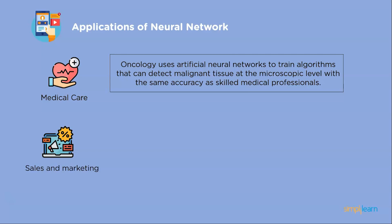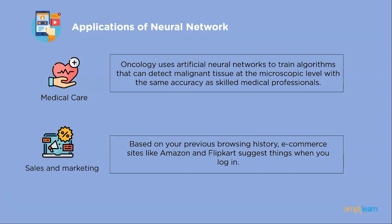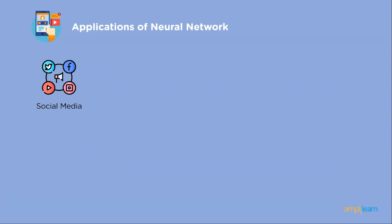In sales and marketing, e-commerce sites like Amazon and Flipkart suggest products based on your previous browsing history. Similarly, Zomato and Swiggy present restaurant suggestions based on your preferences and previous order history. This individualized marketing is true across all new marketing categories including book sites, movie services, hospitality sites, and more — all powered by artificial neural networks.